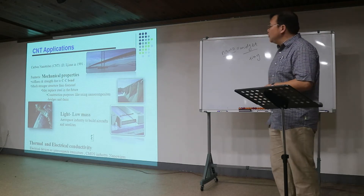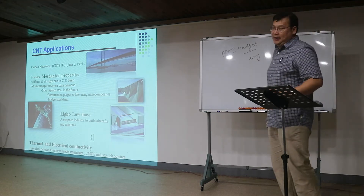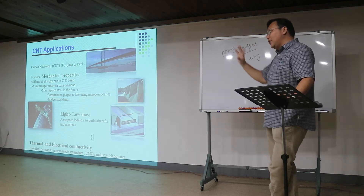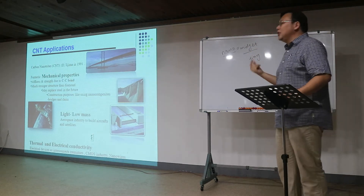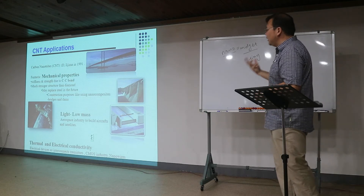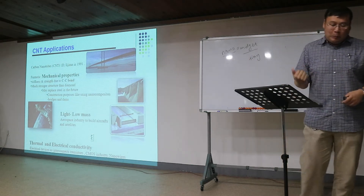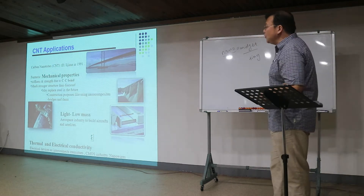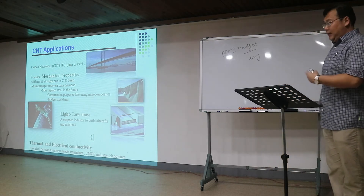Carbon nanotubes have also been used as light, low-mass materials in the aerospace industry, because carbon nanotubes are hollow with a hexagon pattern, making them relatively light. Mixing only a small amount into polymers or other materials can significantly enhance properties. Additionally, because of the carbon-carbon bond, we can achieve very high thermal and electrical conductivities using carbon nanotubes as transistors or as nanowires in fabrication processes.